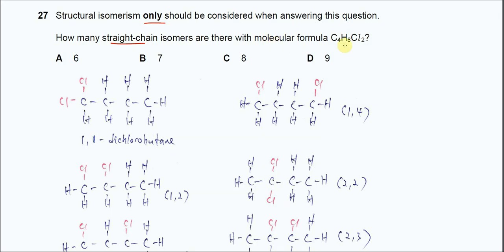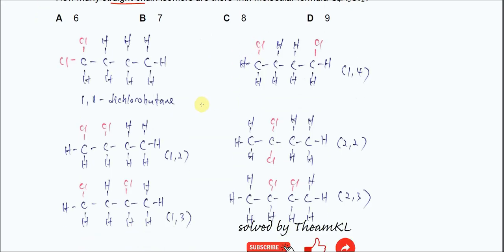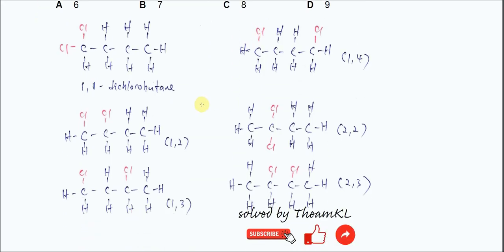The molecular formula is C4H8Cl2, so two chlorines. Let's start with the first one: 1,1-dichlorobutane, where both chlorines are bonded to the same carbon.